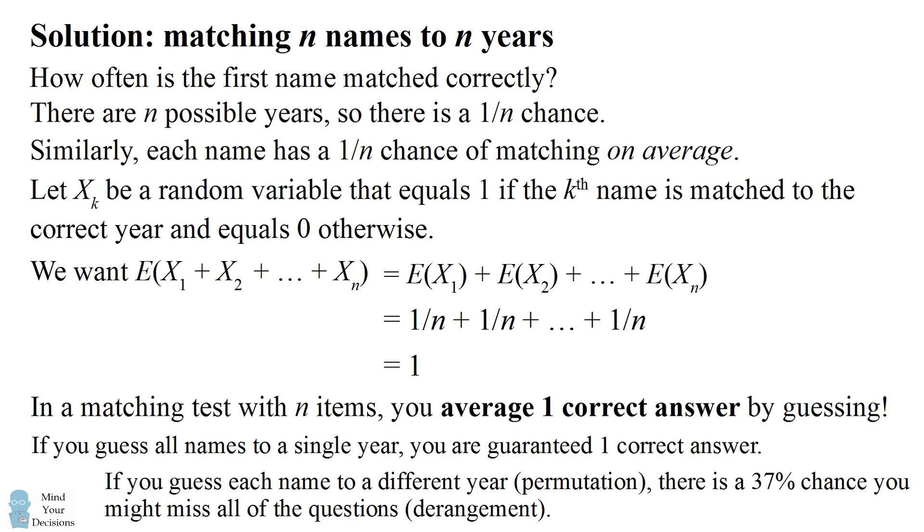So the other way you could guess is you might match each name to a different year. You might try and guess a permutation. The problem here is there's actually a 37% chance or approximately 37% chance that you might miss all of the questions. This sort of arrangement where each item is matched to a wrong year is known as a derangement. And it turns out there's a 37% chance of having a derangement.